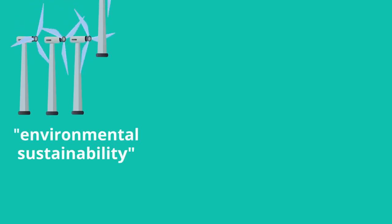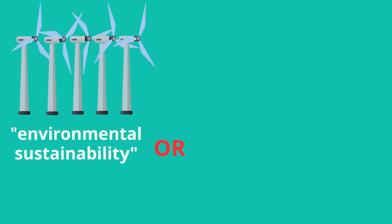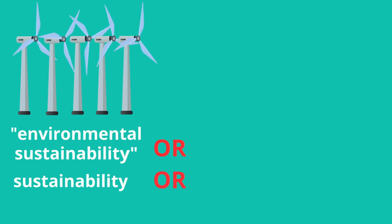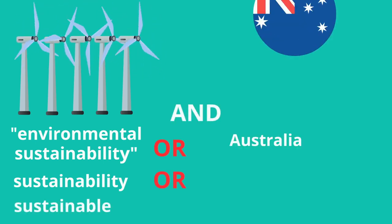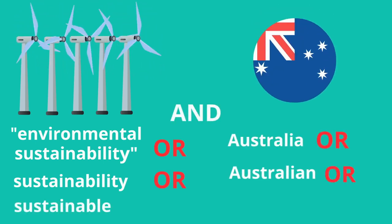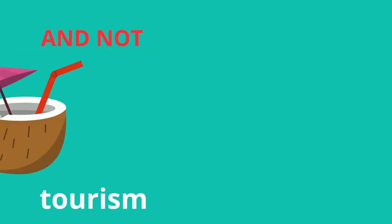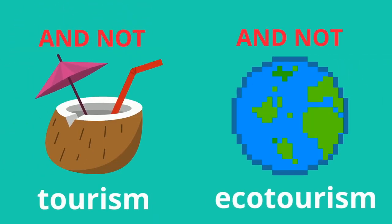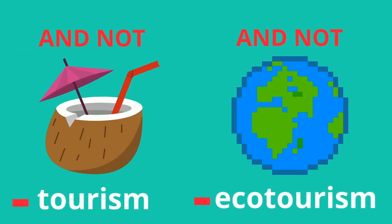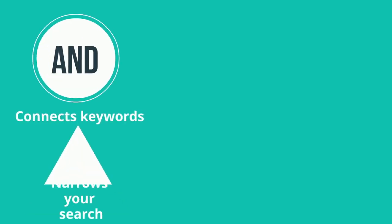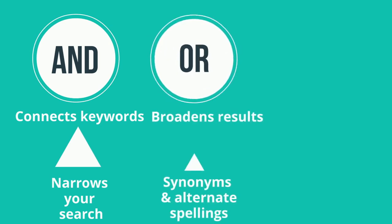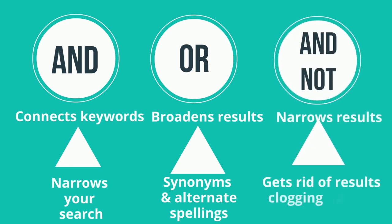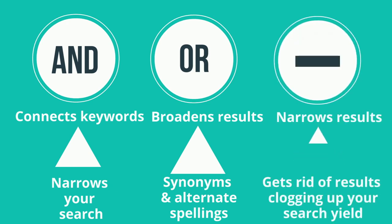So to summarize: AND connects keywords and narrows your search. OR broadens your search results and accounts for synonyms and alternate spellings. AND NOT gets rid of results that are clogging up your search yield.